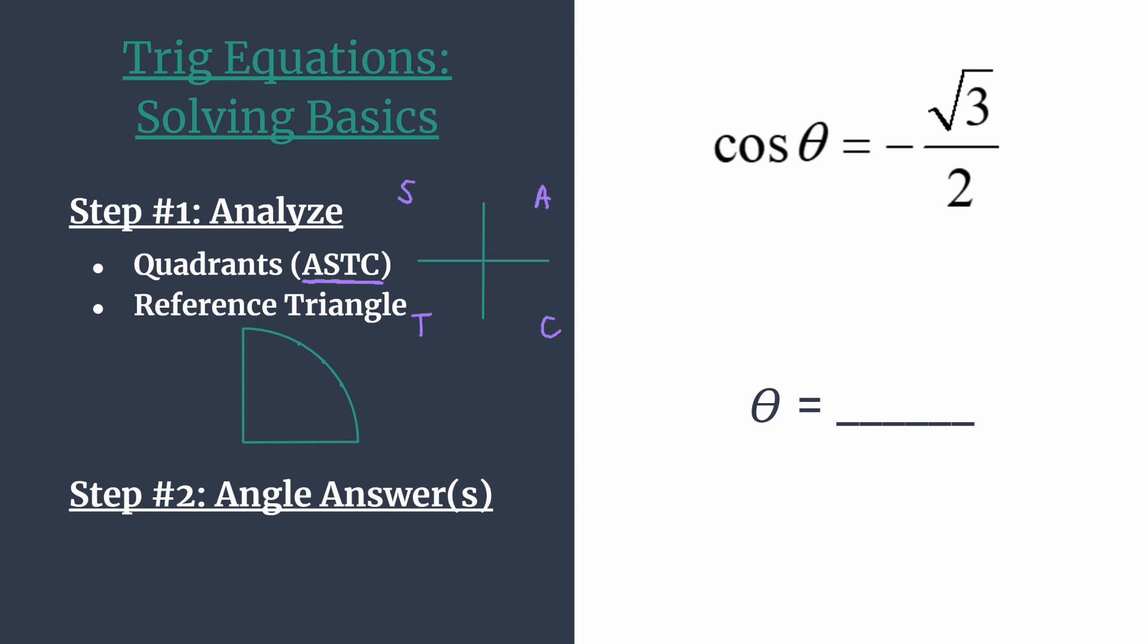Looking back over to our equation, we see that we have cosine theta equals a negative value. We don't really care what value, we just see that negative. So we need to be working in the quadrants that are negative for cosine values. By process of elimination, we see that they are all positive in quadrant 1, and the C in quadrant 4 tells us that cosine is positive there. So we can't be in quadrant 4 either. We must be in quadrant 2 and quadrant 3. So let's go ahead and sketch in those terminal sides.